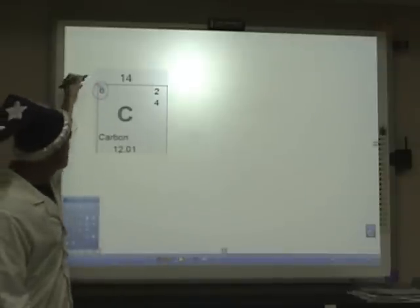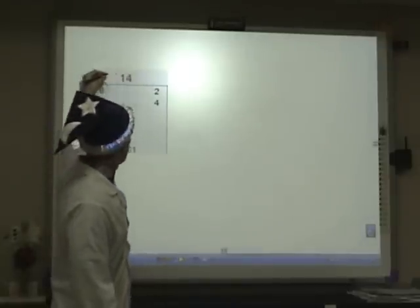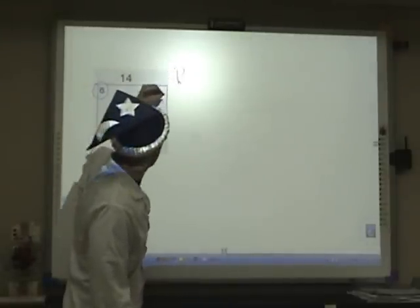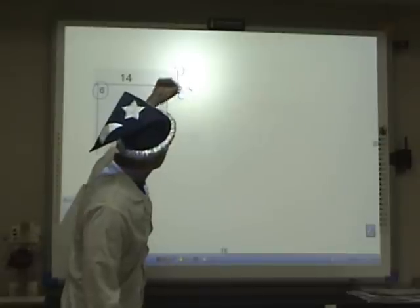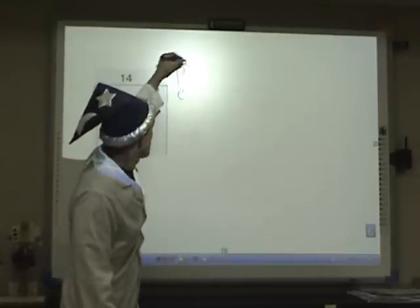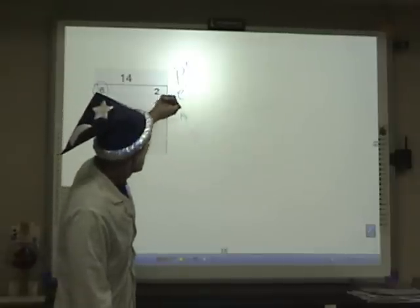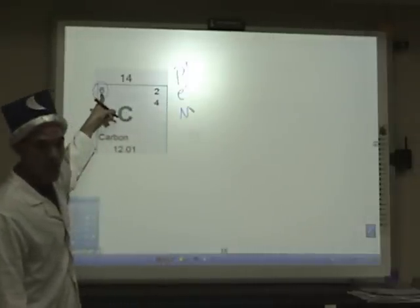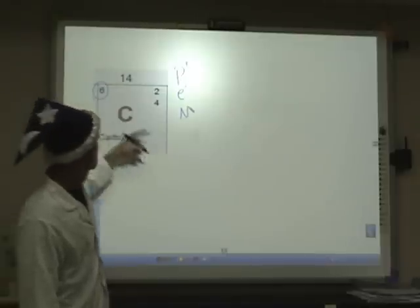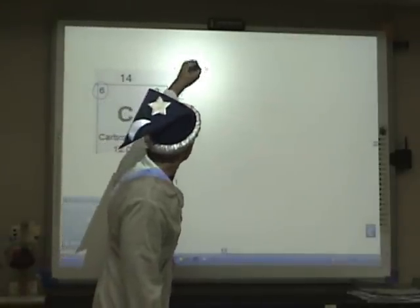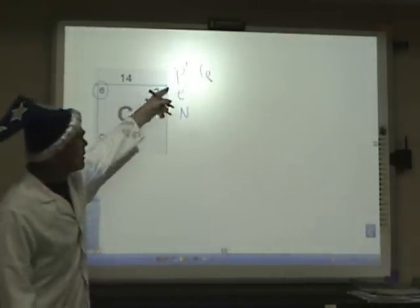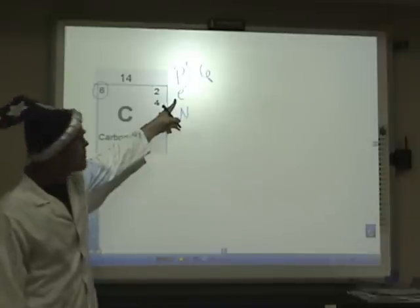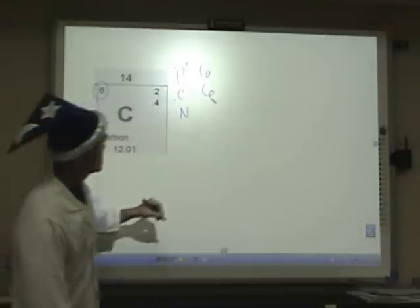What does that mean to us? Well, it means to us that carbon, and we'll put a little P representing positively charged protons, E representing negatively charged electrons, and N for no charge neutrons. If it says six for the atomic number, that means that we have six protons. And the proton and electron number are always going to be the same. So we know that we have six electrons.